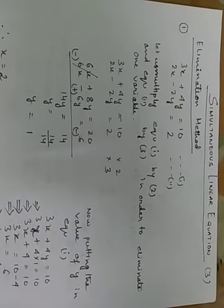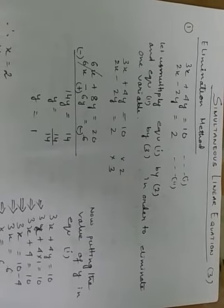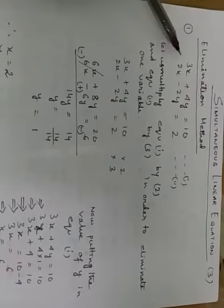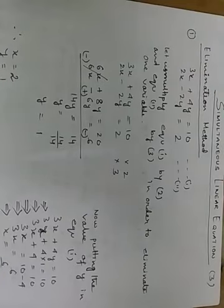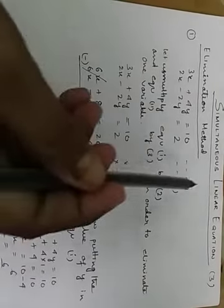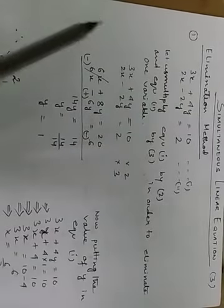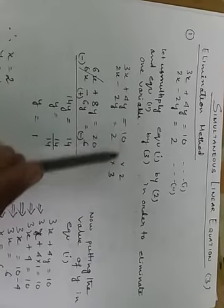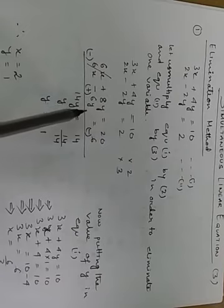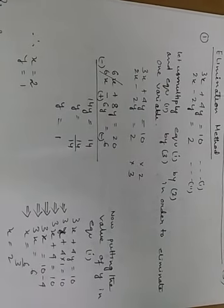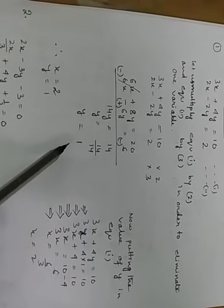Let us multiply equation 1 by 2 and equation 2 by 3 in order to eliminate one variable. If I interchange this, both values will be equal, and if I want to eliminate y, I have to multiply the first equation by 2 and second equation by 4. Now 3x plus 4y equal to 10 into 2, so I am getting 6x plus 8y equal to 20. And 6x minus 6y equal to 6. Now changing the sign I am getting 14y equal to 14. So the value of y is 1.